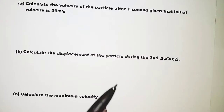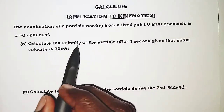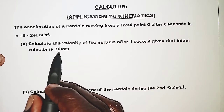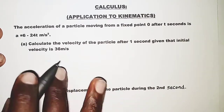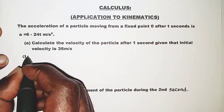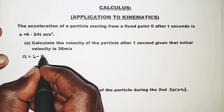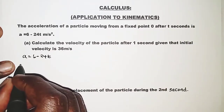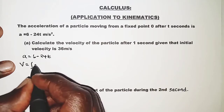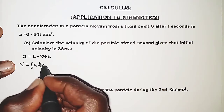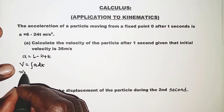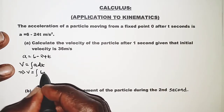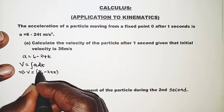So straight to part (a). We are required to calculate the velocity of the particle after one second, given that the initial velocity is 36 meters per second. To calculate the velocity, velocity is obtained by integrating acceleration with respect to t. So we integrate 6 minus 24t with respect to t.